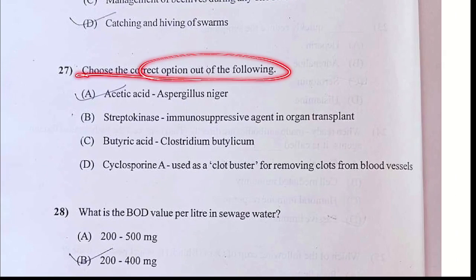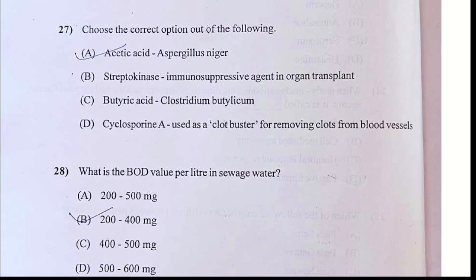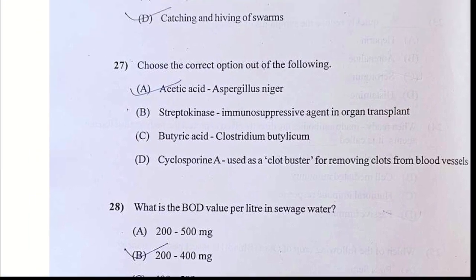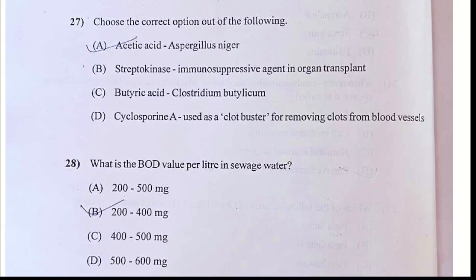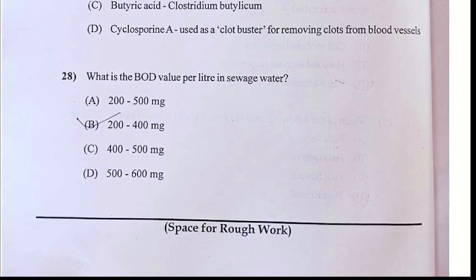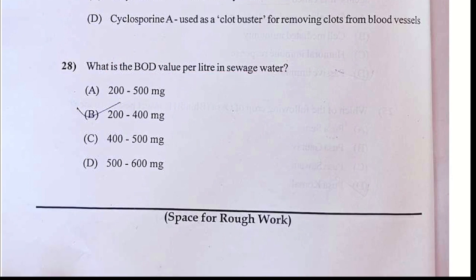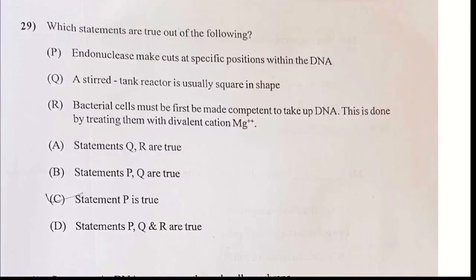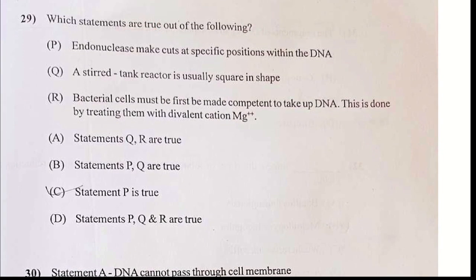Choose the correct option out of the following. Dobson unit — closed trading Dobson count. Your answer should be C. What is the value of BOD per liter? 200 to 500 mg. Which statement is true — C is only correct here.